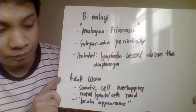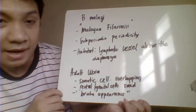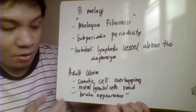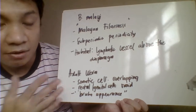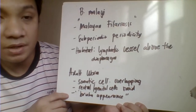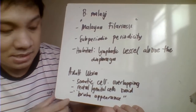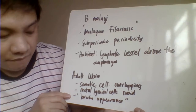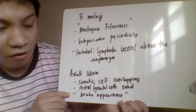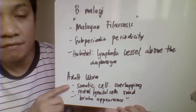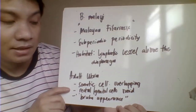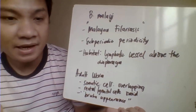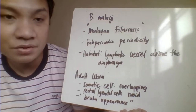Distinguishing characteristics of Brugia malayi compared to Wuchereria bancrofti: the somatic cells are overlapping, whereas in Wuchereria bancrofti they are adequately spaced. The rectal or genital cells are ovoid in Brugia malayi, compared to flat in Wuchereria bancrofti. Brugia malayi also displays a secondary curvature appearance.